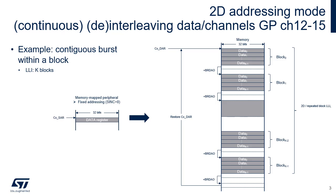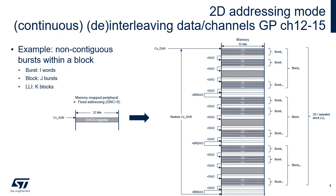For performance, destination transfers can be programmed as forward bursts. This figure highlights the repeated block mode with the stride between bursts and the stride between blocks. The GPDMA transfers K blocks of J bursts, each burst containing I words.